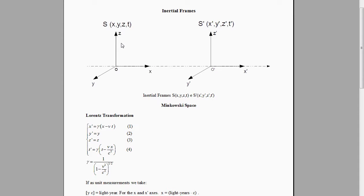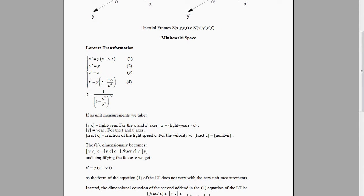The transformation of the coordinates in S and S' is given by the Lorentz transformation. We would like to put this in a more symmetrical form. For doing this, we change the unit measurements. We take light years for the x and x' axis, years for the t and t' axis, and fraction of the light speed c for the velocity v.